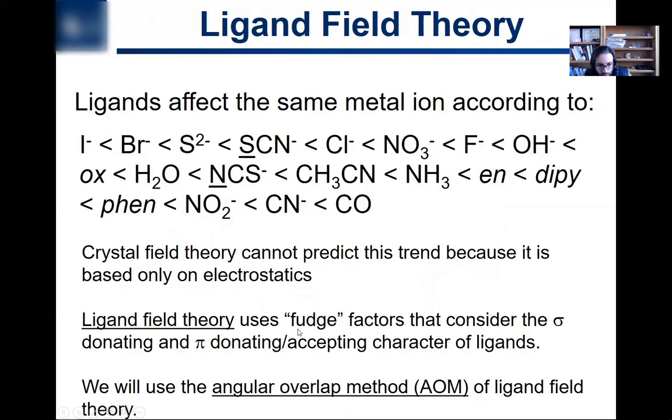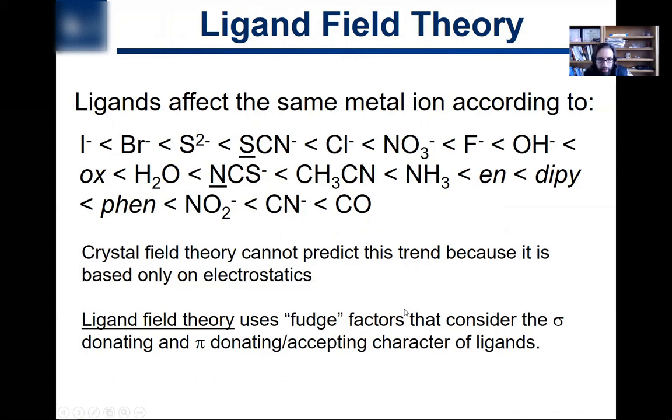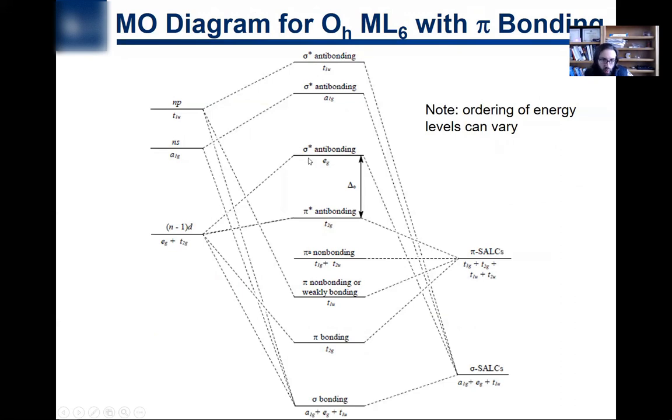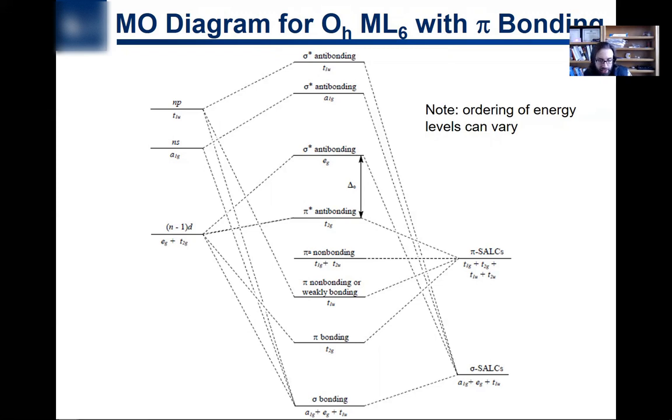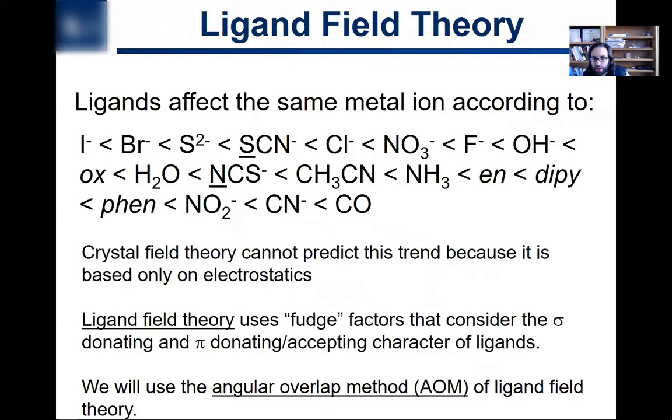And so this is saying what I just said about angular overlap method. Ligand field theory basically uses numerical factors, I'm saying your fudge factors, that consider the sigma donating and pi donating acceptor character of the ligands in order to make calculations about them. So in order to figure out what's going to happen to all these levels, we have to know something about the strength of the different interactions of the ligands. So we're going to assign numerical quantities, specifically we're going to be looking at angular overlap method.